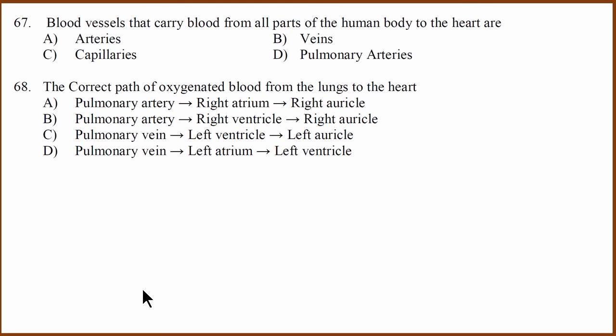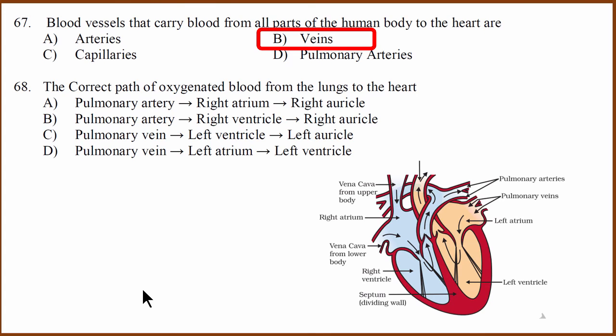Next biology question. Blood vessels that carry blood from all parts of the human body to the heart. Various parts of the body to the heart, that is veins. Next, correct path of oxygenated blood from lungs to heart. Oxygenated blood from lungs to the heart. This is through the pulmonary vein. The pulmonary vein goes to the left atrium. The left atrium to the left ventricle. Correct answer D.